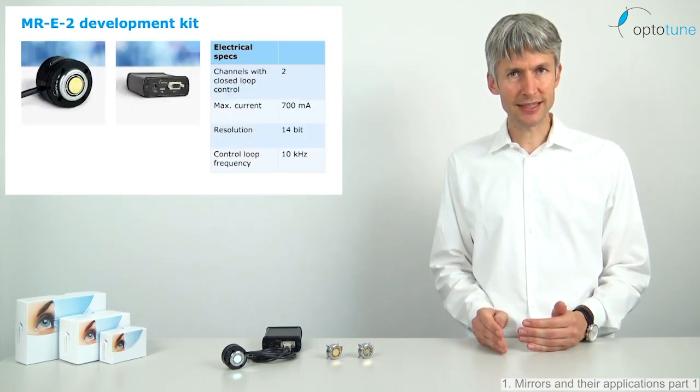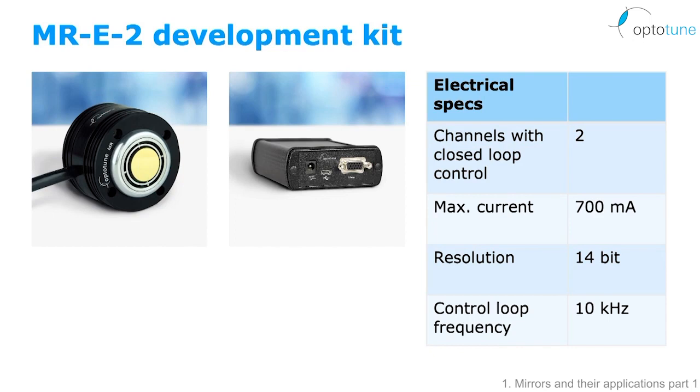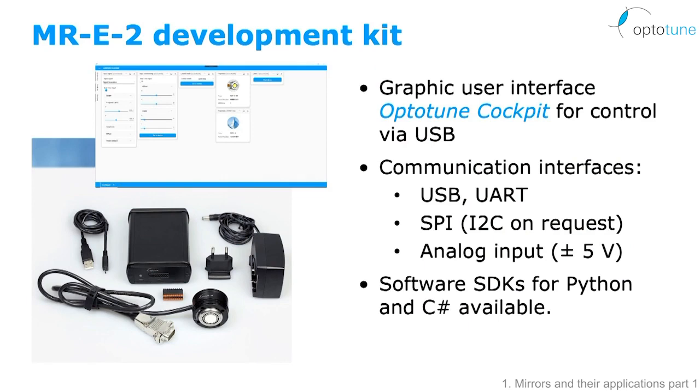The MRE2 kit consists of the mirror head and the base unit. The mirror head contains the mirror and the analog driving electronics. The base unit contains the digital driving board and the IOs. You get a turnkey solution with an intuitive graphical user interface. The driver can be controlled over USB and UART. For embedded systems, a fast SPI interface is available as well. We provide free SDKs for Python and C-Sharp in order to support a quick integration of our mirror into your system.